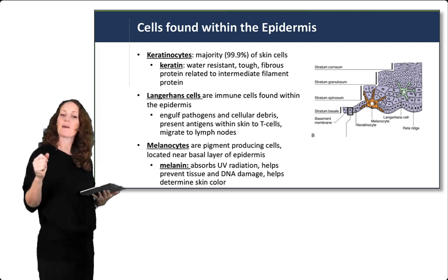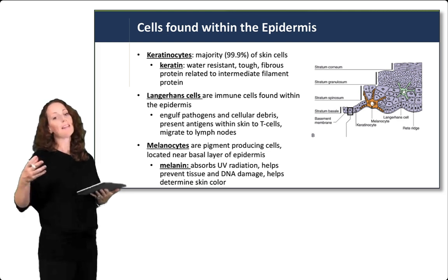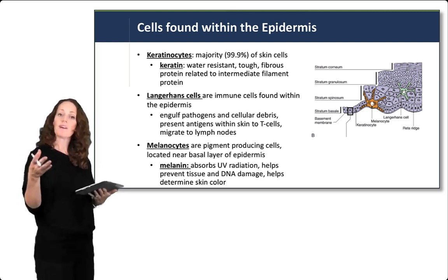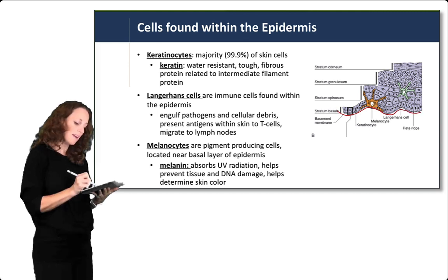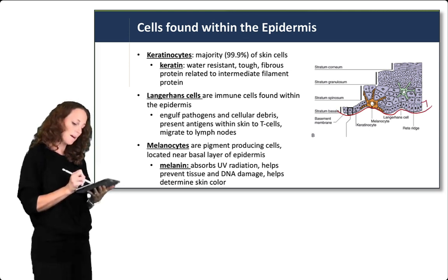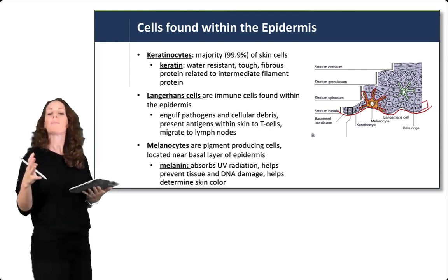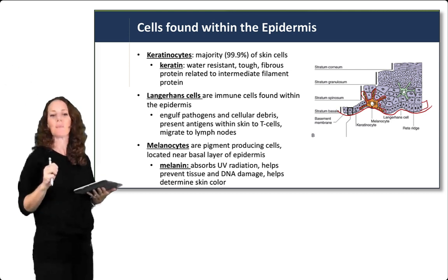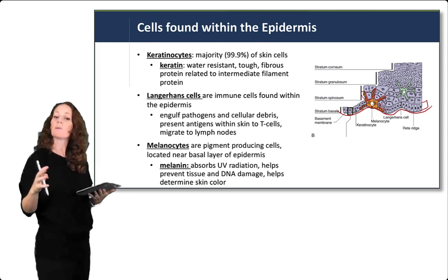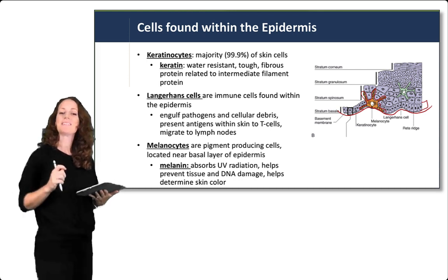The last cell type found within the epidermis are melanocytes. Melanin is an important pigment produced by melanocytes, which are found in the basal layer of the epidermis. In the diagram, the cell shown in an orangish-brown color represents a melanocyte, producing melanin pigment and injecting it into the layers above. Melanin is important for absorbing UV radiation, helping prevent tissue and DNA damage, and also helping to determine skin color.